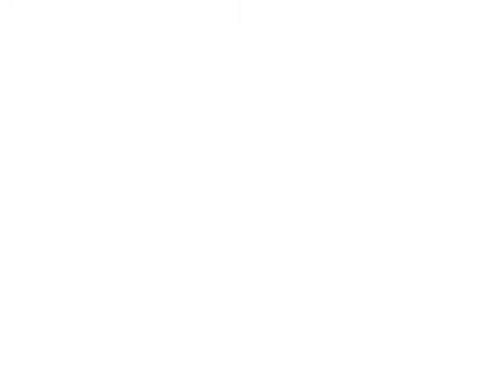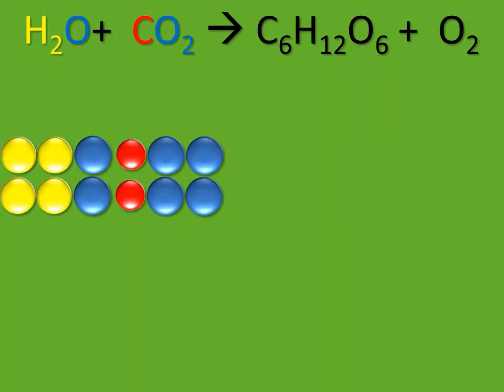Then, with the help of the sun, it breaks those molecules apart into their individual atoms. Now, remember, the plant is trying to make a glucose molecule.